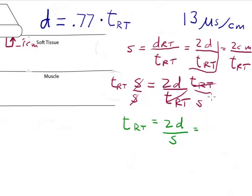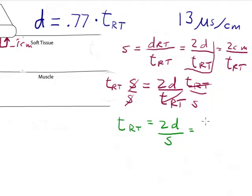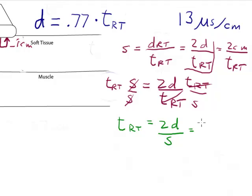And plugging in the distance of one centimeter here, that gives me two centimeters divided by 1.54. The speed of sound in soft tissue again is 1.54 millimeters per microsecond.